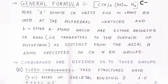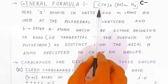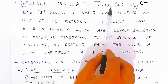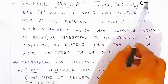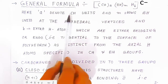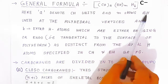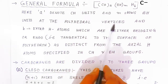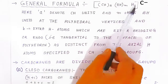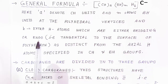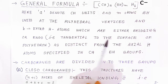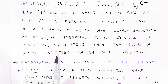Now we are going to see the general formula: (CH)_A (BH)_M H_B raised to C minus. Here A denotes the carbon-hydrogen unit, and M shows the boron-hydrogen unit at the polyhedral vertices. B denotes hydrogen atoms which are either bridging or endo-type (tangential to the surface of the polyhedron), as distinct from the axial hydrogen atoms in the CH and BH groups.